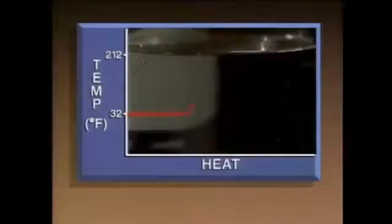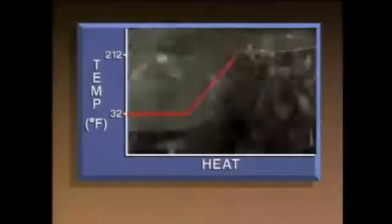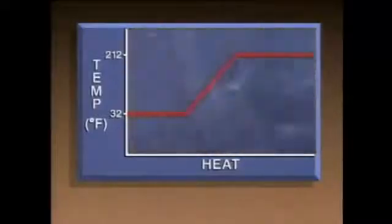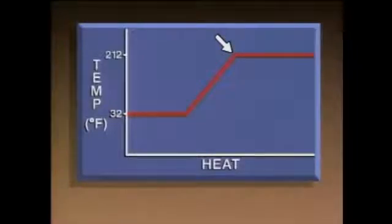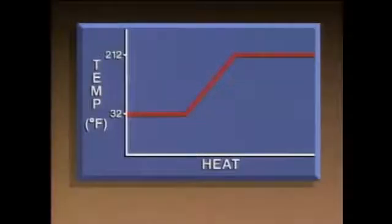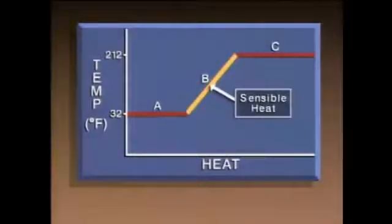Now that the ice is melted, the addition of heat does produce a temperature change. At 212 degrees the water boils into steam, but the temperature stays the same — the water undergoes a phase change but not a temperature change. At 212 degrees, the latent heat causes the molecules to move fast enough to overcome the molecular forces holding them together, and when the molecules absorb enough latent heat, they leave the water as steam.